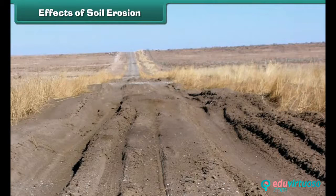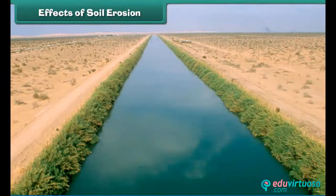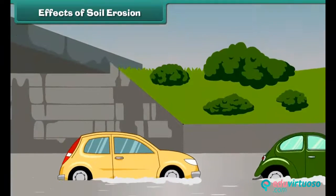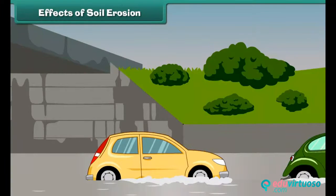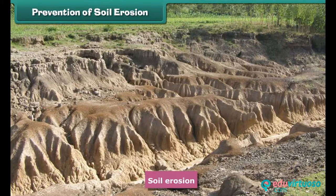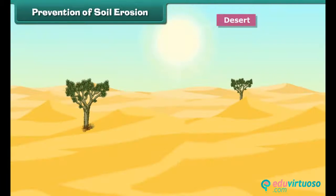Due to soil erosion, soil shifts and accumulates on roads and streets, blocking driving and resulting in accidents. It also blocks many irrigation canals and increases the risk of flooding. The eroded soil deposits in water resources like rivers and lakes, polluting them. Soil erosion is a major environmental problem that has affected the whole world, from forests to deserts.